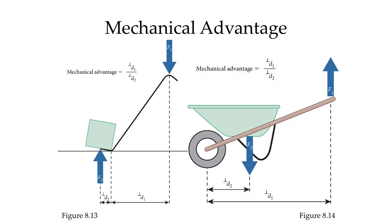On the right-hand side we have a wheelbarrow. The force we apply is at the handles, again F1. The weight of whatever we're moving is located around the center of the wheelbarrow, and that force is F2. We are at a mechanical advantage because D1 is larger than D2, and therefore we need to provide less force at F1 in order to lift the weight at F2.